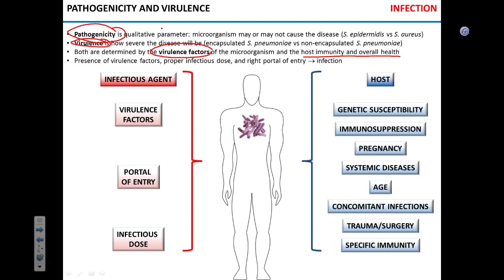Another important thing is the portal of entry. Take HIV — it is transmitted either sexually or by blood. So you could hypothetically drink an HIV-containing viral suspension and nothing would happen as long as it is not exposed to the blood. The same goes for rabies: rabies is transmitted via blood, so you can essentially drink rabies and nothing will happen because it cannot survive in the stomach or intestine.